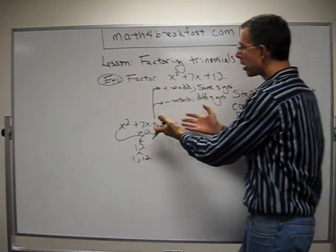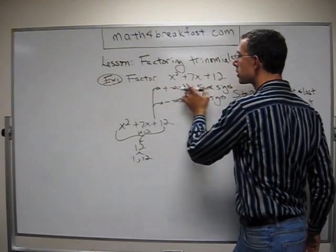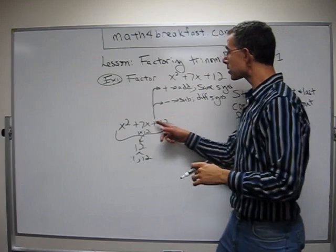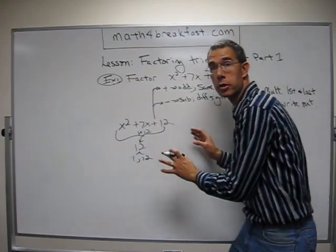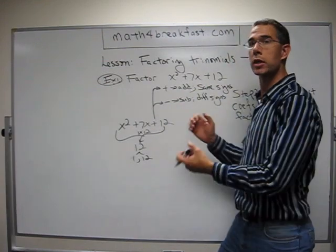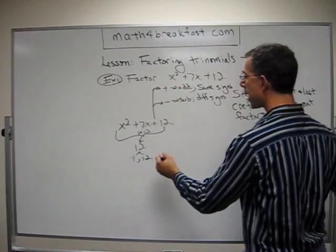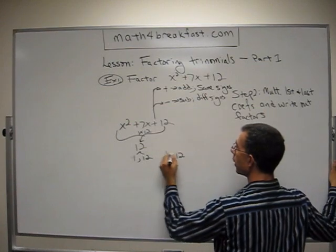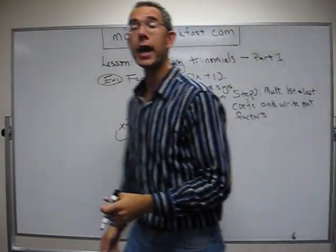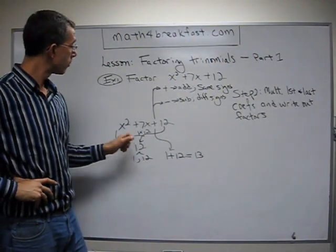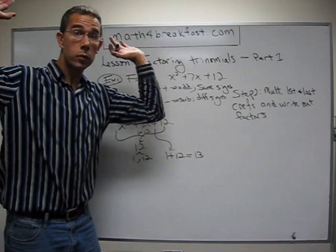This problem is whispering: plus, add, same signs. Minus, subtract, different signs. In this case I have a plus, so I need to add. 1 plus 12 equals 13. And I see the 13, and I look at it, and I have really no attachment to the 13 — because x squared plus 7x plus 12 doesn't have 13. We move on.